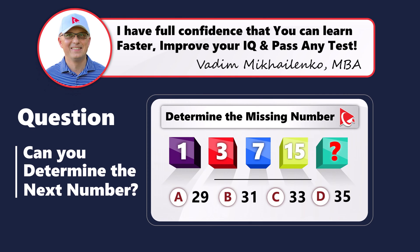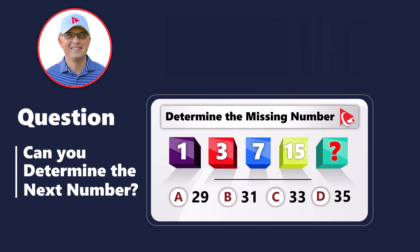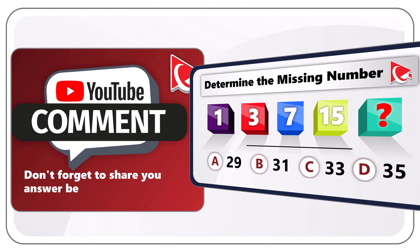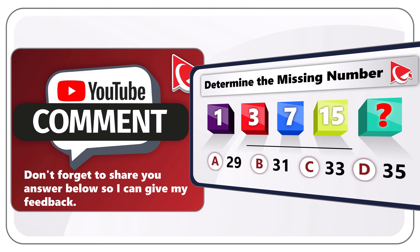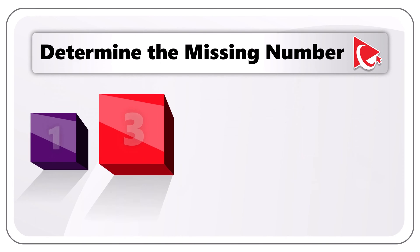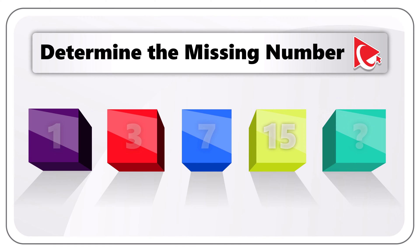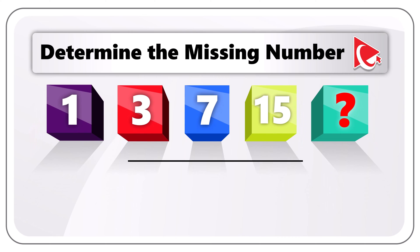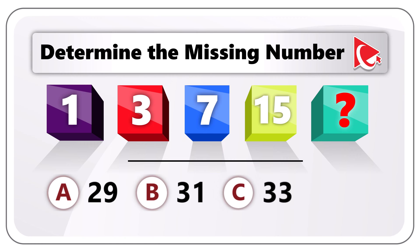Now let's put your knowledge to the test. Take a moment to work through this independently and don't forget to share your answer in the comments below. You need to determine the missing number in the sequence: 1, 3, 7, 15, and then comes the missing number. Select it out of four possible choices: choice A 29, choice B 31, choice C 33, and last but not least choice D 35.